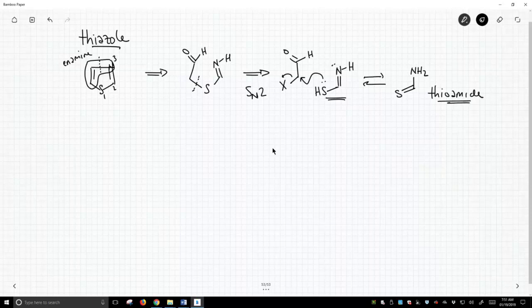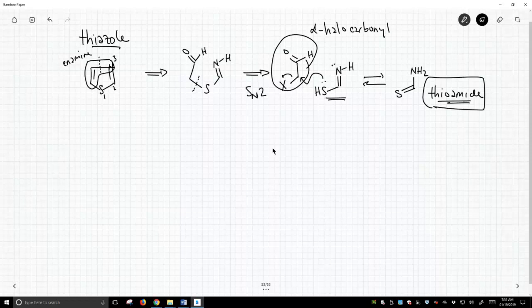So what we're really going to start with to do this chemistry, we need a thioamide to do these reactions, and we need an alpha-halocarbonyl. Now, we've learned how to do alpha-halogenations of carbonyl compounds. So that is no problem making this molecule.